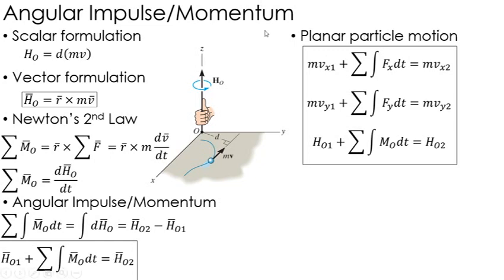In the x and y direction, I have linear momentum plus the linear impulses equals final linear momentum. So I have those two equations in the x and y directions. I also have a moment equation, just like I had in statics where I sum the forces and sum the moment, which is the initial angular momentum plus the angular impulses equals a final angular momentum.